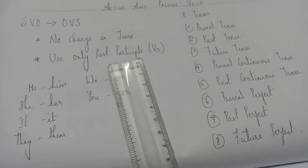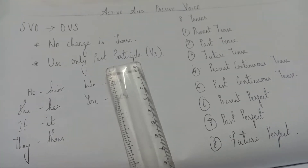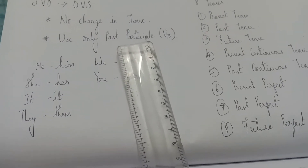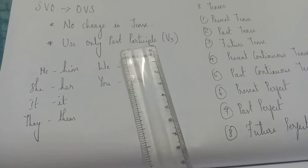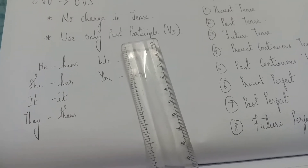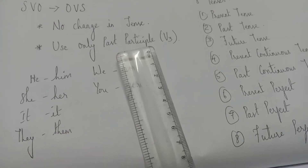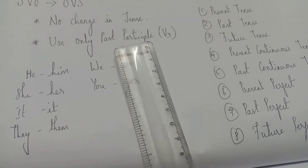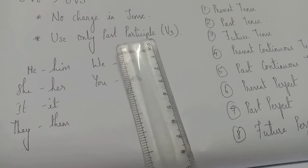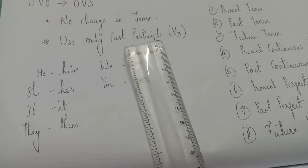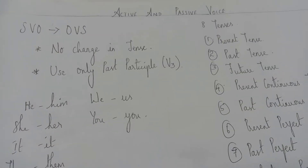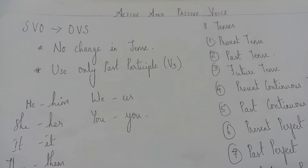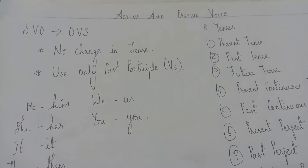So to summarize: first, SVO becomes OVS pattern in passive. Second, no change in tense — we should not change the tense of the verb. Third, we have to use only the past participle verb, that is, verb 3 form. Whenever you change active into passive, you have to use only the past participle verb.